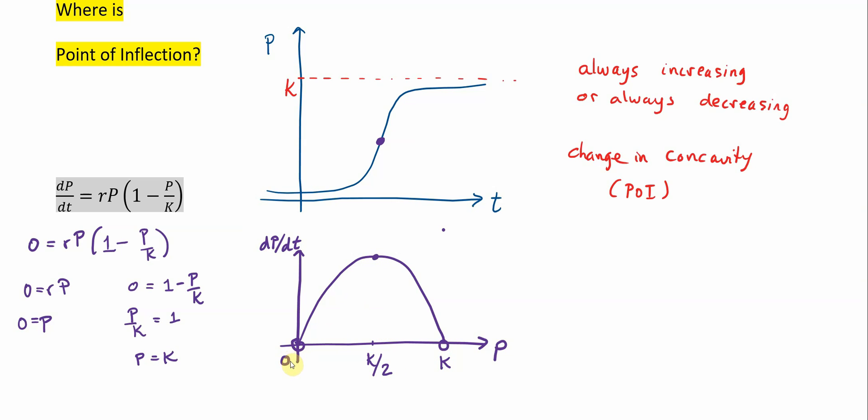This is precisely where the derivative will go from increasing to decreasing. And the function P with respect to t will go from increasing at an increasing rate to increasing at a decreasing rate. And this is a little bit unusual because we have found something about the inflection point.